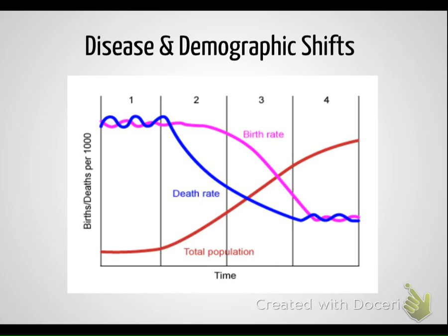One of the other major things you need to understand is how, with these new scientific innovations, we are seeing some major demographic shifts. Demography, if we break that word down, is the study of populations. As we look at these different stages — this is called the demographic transition — if you look at this little graph here, it talks about how at one point we have high birth rates and death rates. So at this time we have a low population: high birth rates but also high death rates, so the population remains pretty low.